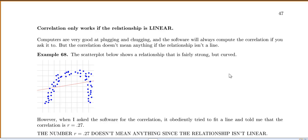So again computers are very good at plugging and chugging and the software will always compute the correlation if you ask it to. But that correlation doesn't actually mean anything if your relationship isn't a line.